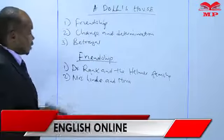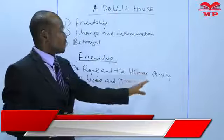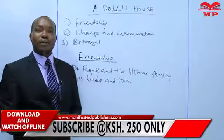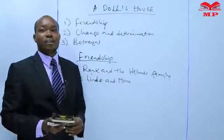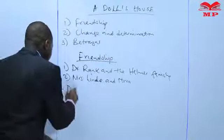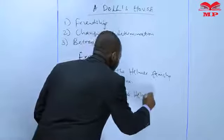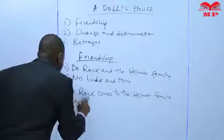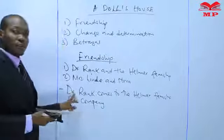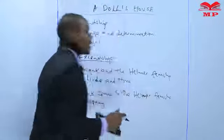Dr. Rank is a close friend to the Helmer family. In fact, he comes to this family on a daily basis, twice or thrice a day. Dr. Rank is a single man who lives alone and is an old man, so he comes to this family for company — not as a doctor, not as a physician, not as the family doctor — just as a friend.